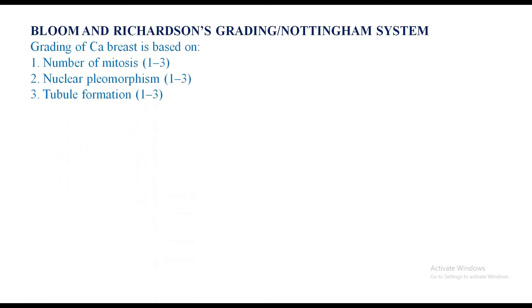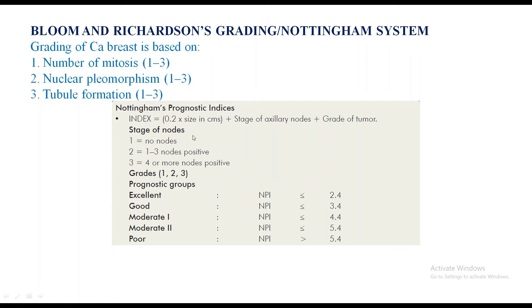Bloom and Richardson grading, also known as the Nottingham system: grading of carcinoma breast is based on number of mitoses, nuclear pleomorphism, and tubule formation. The Nottingham Prognostic Index (NPI) is 0.2 multiplied by tumor size in centimeters, plus stage of axillary nodes, plus grade of tumor. Stage of nodes: 1 is no nodes, 2 is one to three nodes, 3 is four or more nodes positive. Prognostic groups: excellent is NPI less than 2.4, good less than 3.4, moderate 4.4, moderate-2 is 5.4, and poor is NPI more than 5.4.